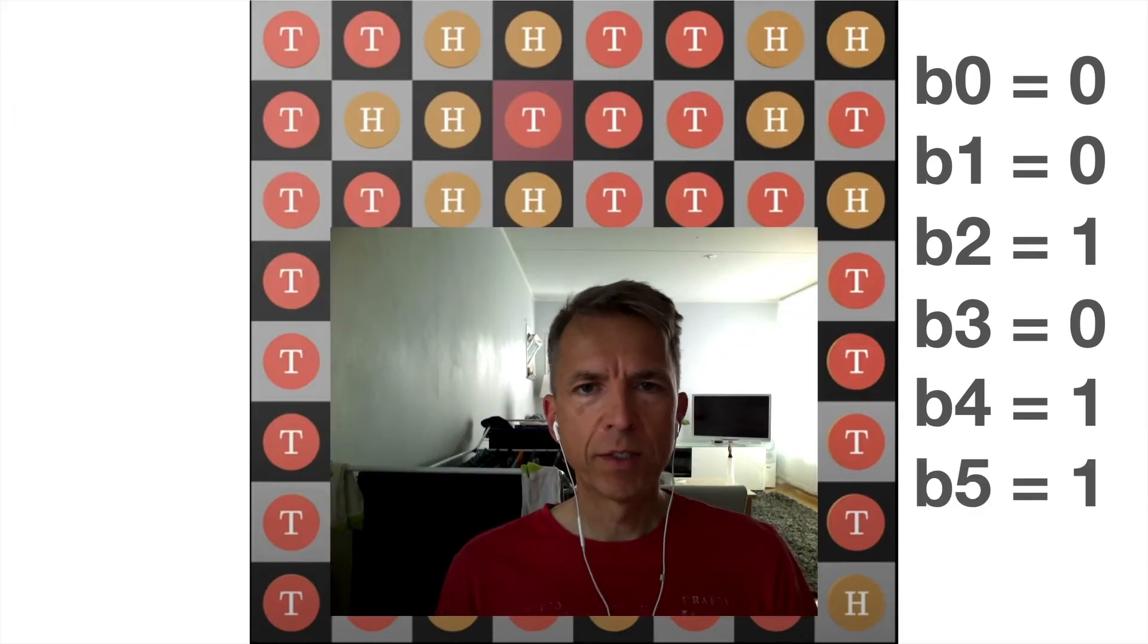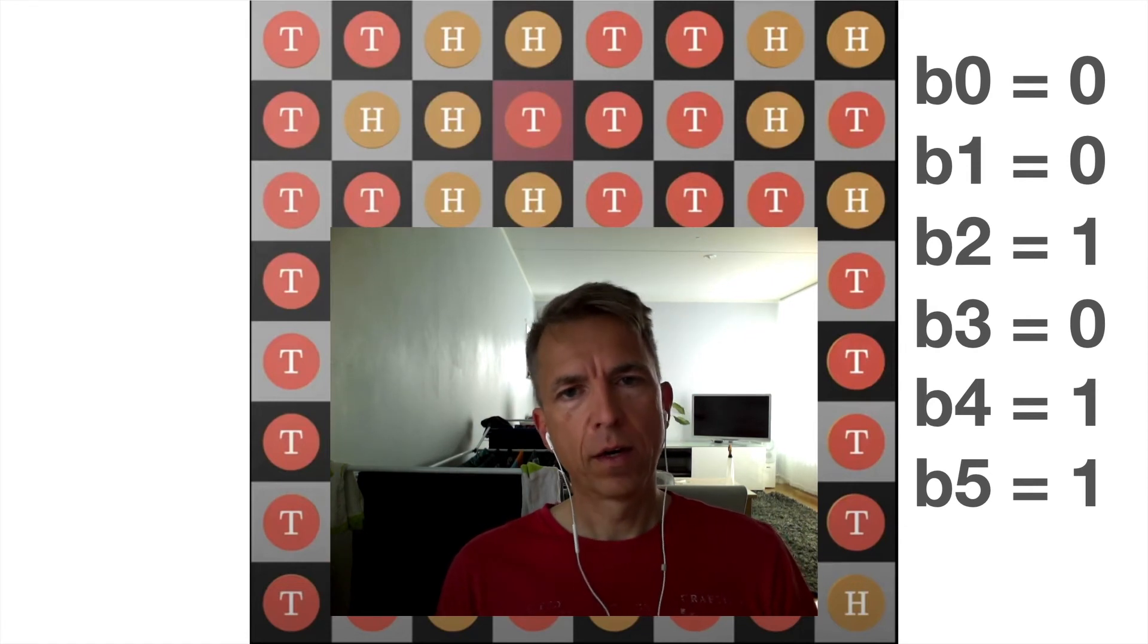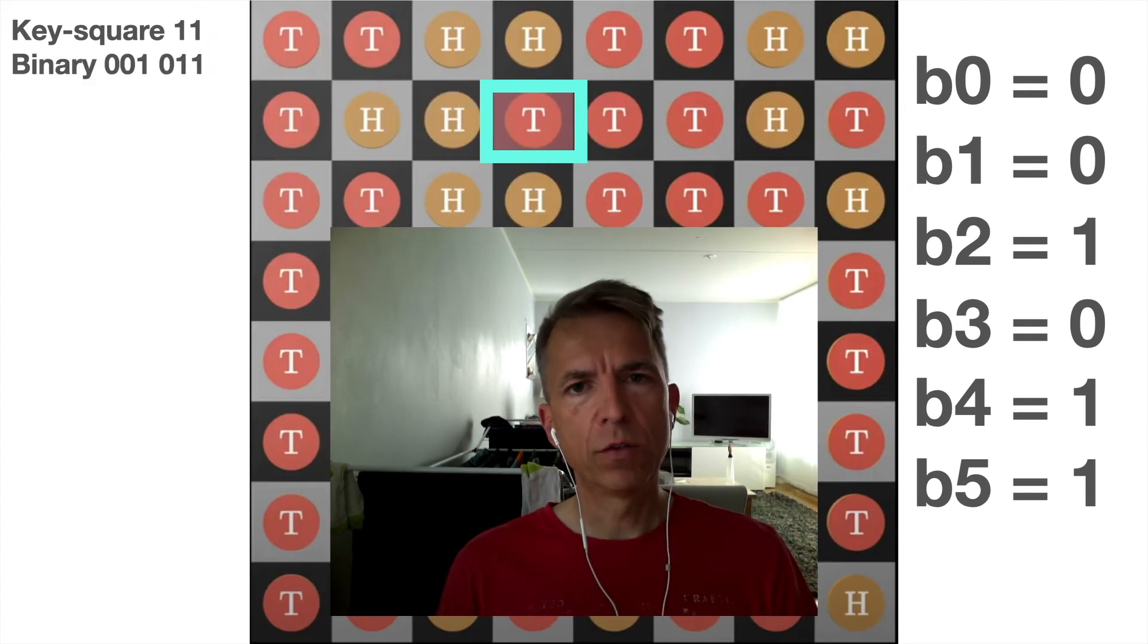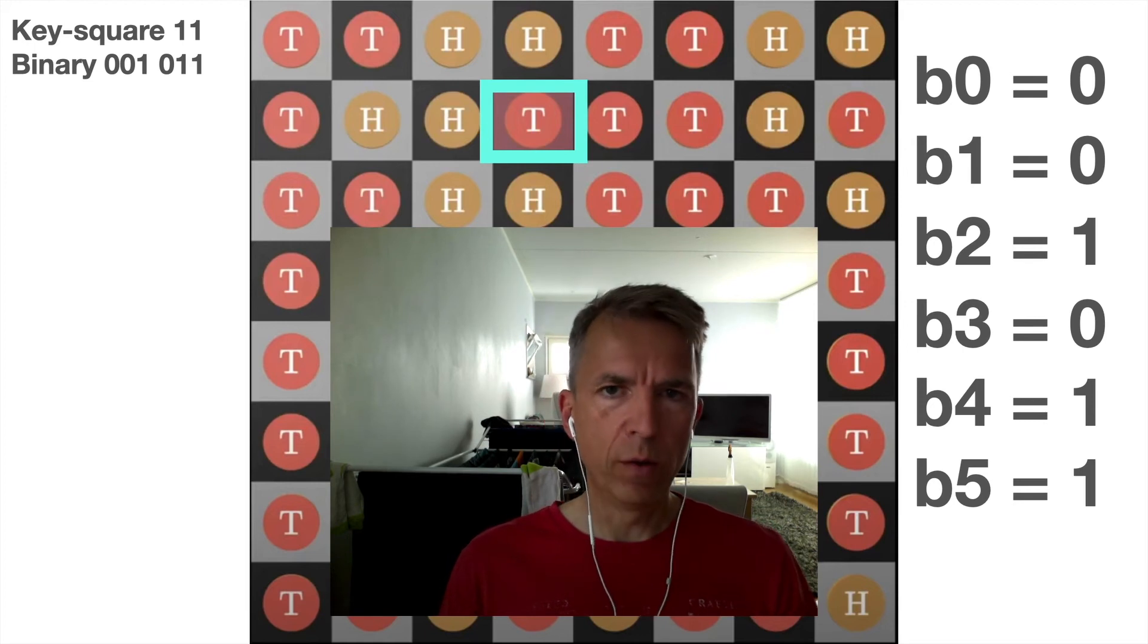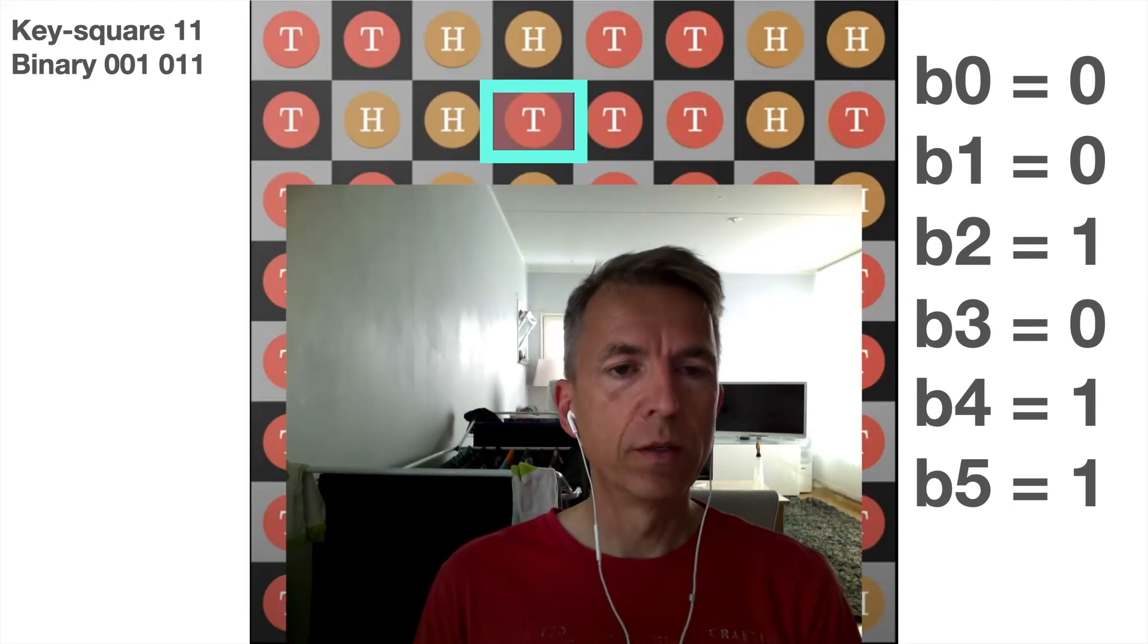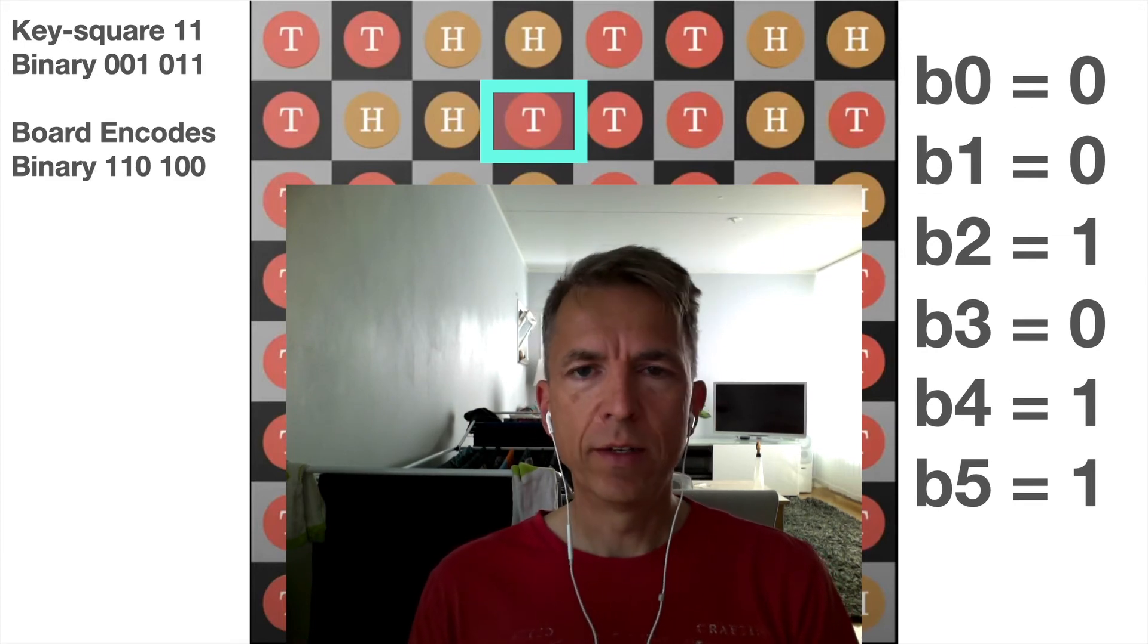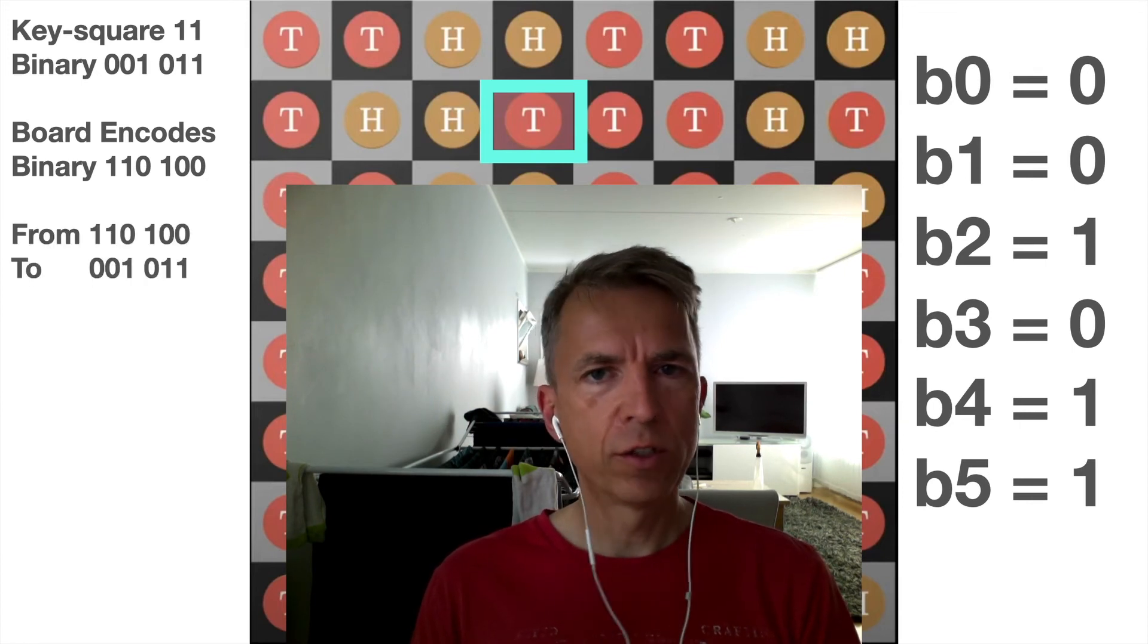And if this was an encoded board the key would be under square 52. So how does prisoner number one now calculate which coin to flip to encode where the key is. So in this example the key is under the square with index 11 decimal 11 which is binary zero zero one zero one one.